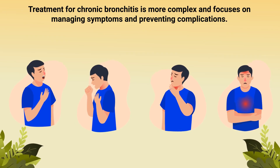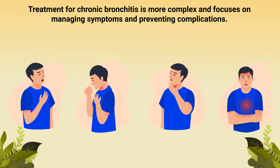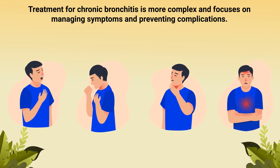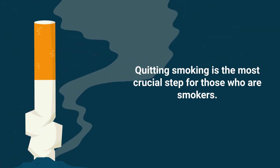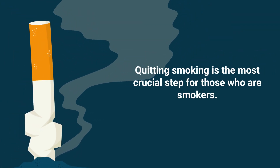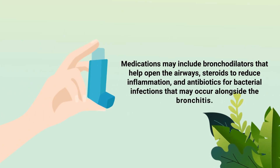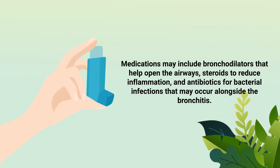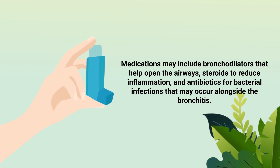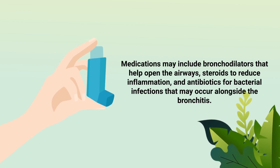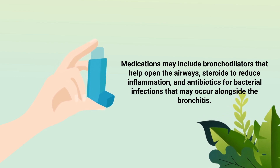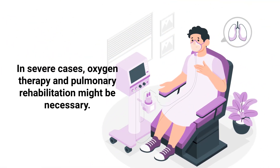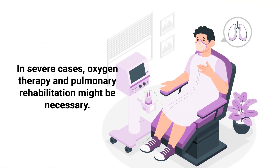Treatment for chronic bronchitis is more complex and focuses on managing symptoms and preventing complications. Quitting smoking is the most crucial step for those who are smokers. Medications may include bronchodilators that help open the airways, steroids to reduce inflammation, and antibiotics for bacterial infections that may occur alongside the bronchitis. In severe cases, oxygen therapy and pulmonary rehabilitation might be necessary.